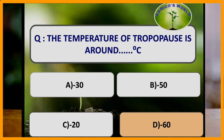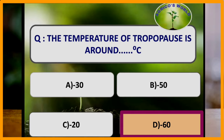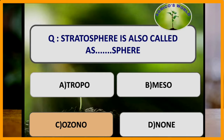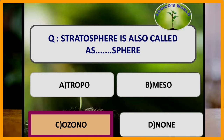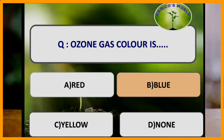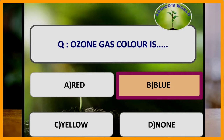The temperature of troposphere is around how many degrees Celsius? The temperature of troposphere is around -60 degrees Celsius. Stratosphere is also called which sphere? Stratosphere is also called ozonosphere because 90% of the ozone is present in this layer. Ozone gas is blue in color, its formula is O3, and it is an absorber of ultraviolet radiation.